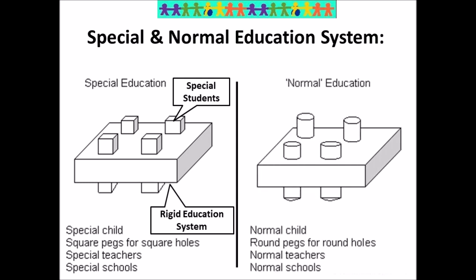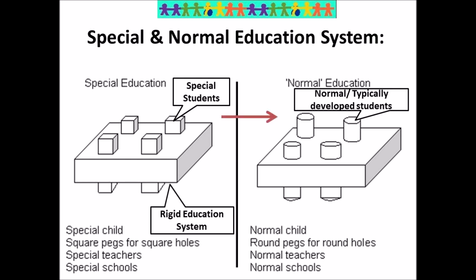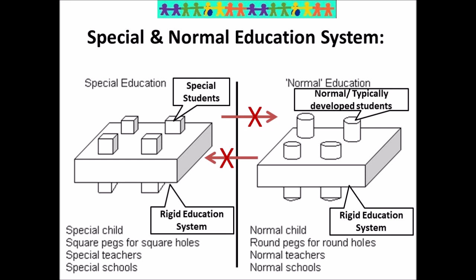The next one is the normal or typical education system, where only typically developed students can fit. As you can see, the pegs here are cylindrical. Students from special education schools will not fit into the normal education system, and similarly, normal students will not fit into the special education system. Like the special education system, the normal education system is also rigid. These schools have regular teachers using regular teaching strategies.